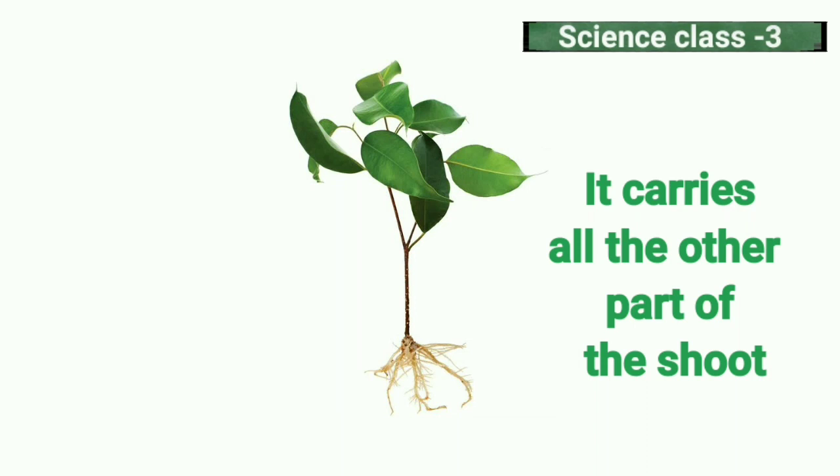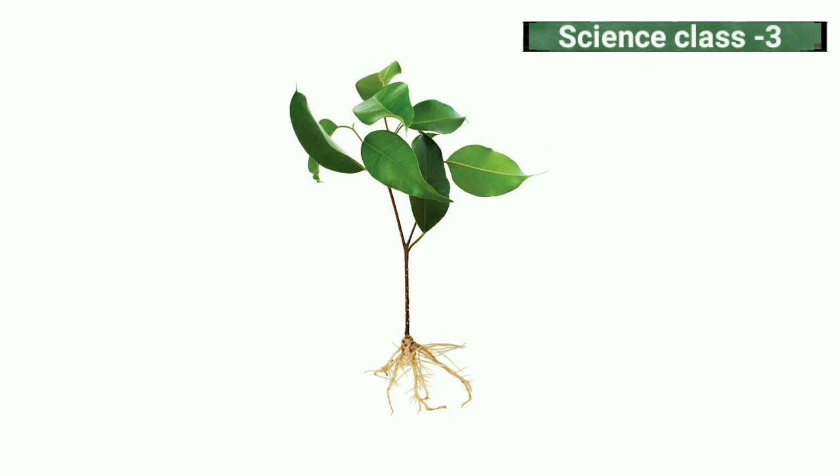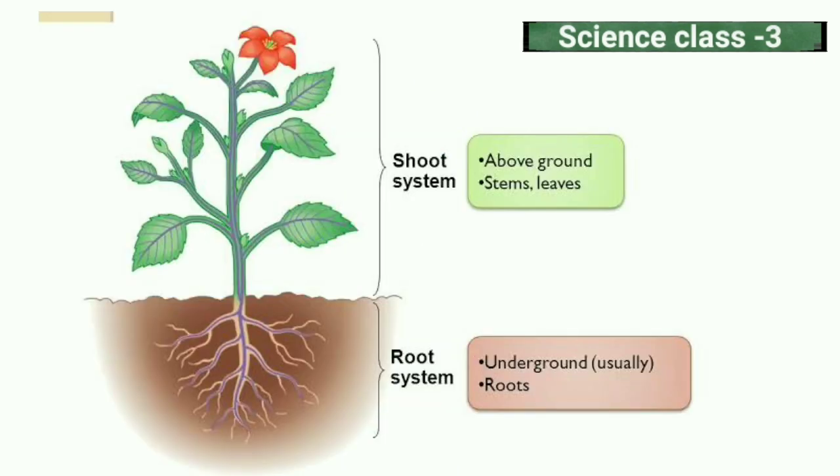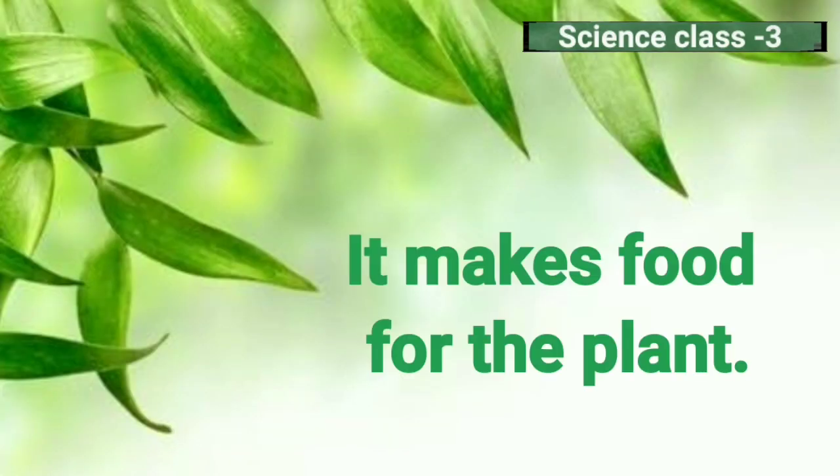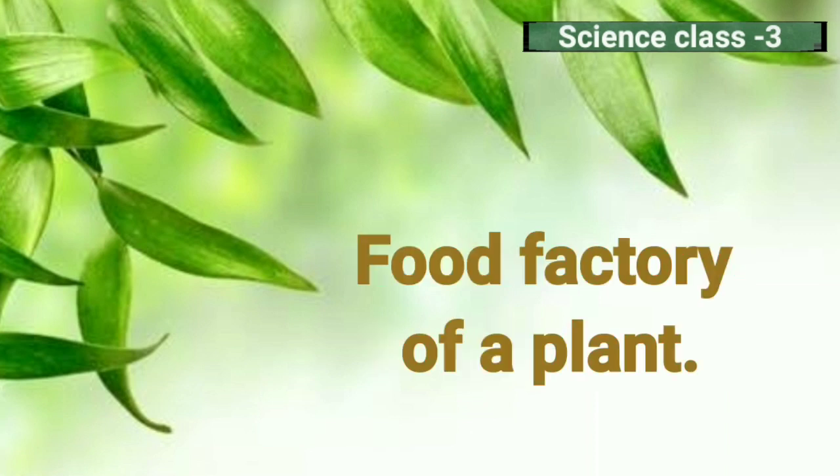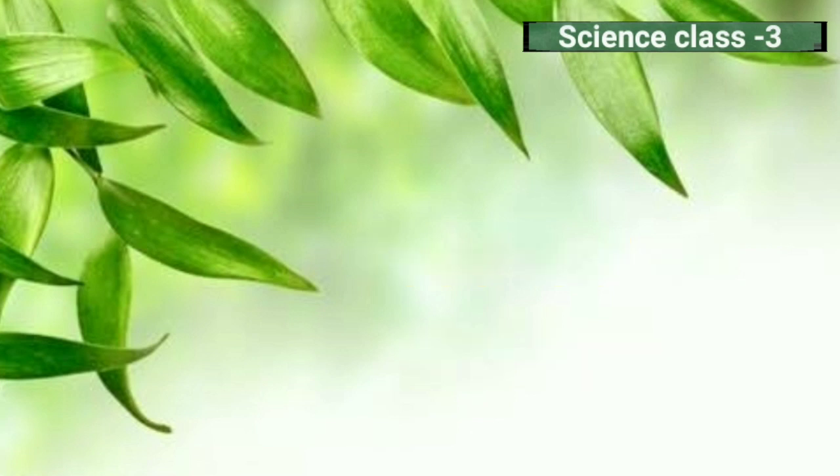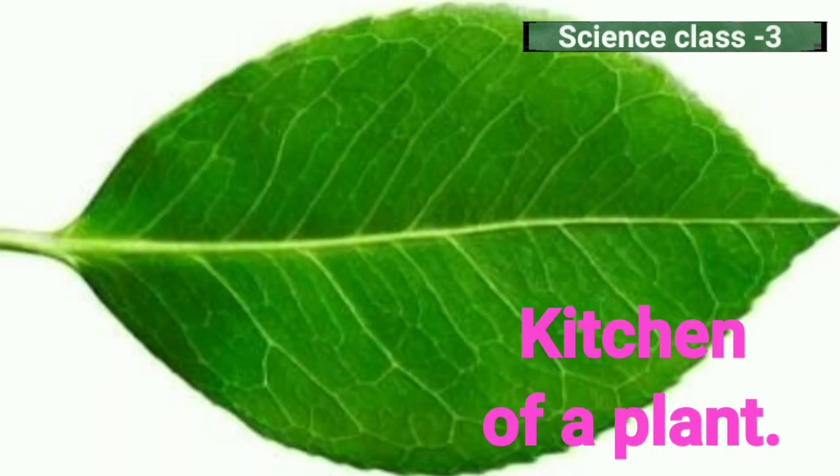You all know parts of shoots are branch, leaf, flower, fruit. Function of a leaf: it makes food for the plant. Leaf is also known as the food factory of a plant or it is a kitchen of a plant.